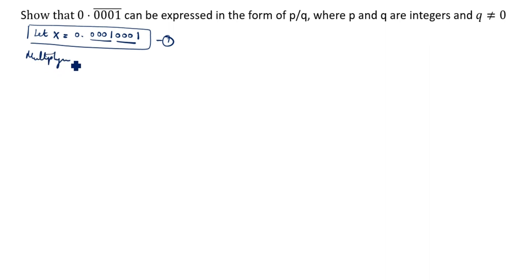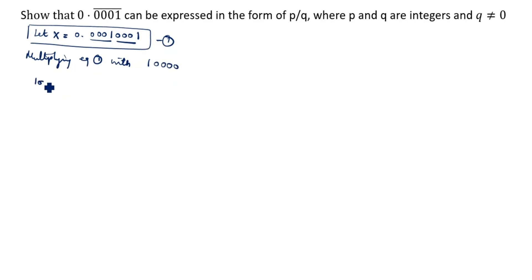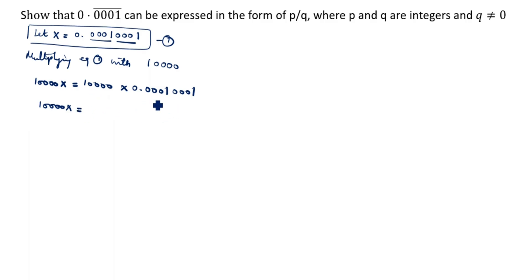Multiplying equation 1 by how many? You see there are 4 digits under the bar: 1, 2, 3, 4 — so we write 4 zeros, which means 10,000. Multiply equation 1 by 10,000. So 10,000x equals 10,000 times 0.00010001..., which gives 1.00010001... This is the second equation.